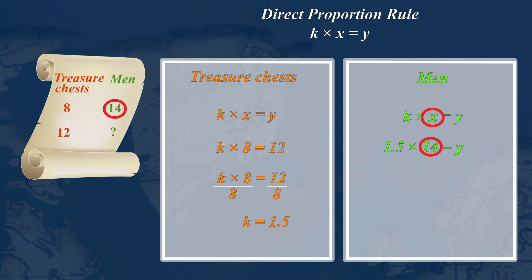X is 14 men. We multiply these to find Y. Y is 1.5 multiplied by 14, so Y is 21. So 21 men can carry all the treasure chests. Let's go.